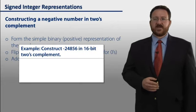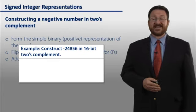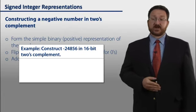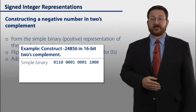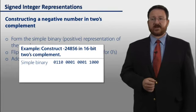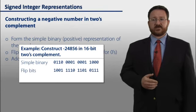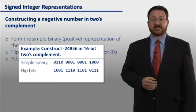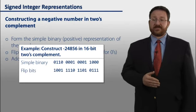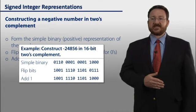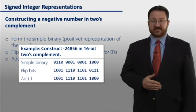So let's look at an example. Construct a 2's complement representation for negative 24,856 in 16-bit 2's complement. We start by forming the simple binary representation of positive 24,856. So here's that encoding. We then flip all the bits. We exchange 0's for 1's and 1's for 0's to form the next intermediate step. We then add 1 to that flipped representation, and with the carries, we get this representation. And so this number represents negative 24,856 in 2's complement.